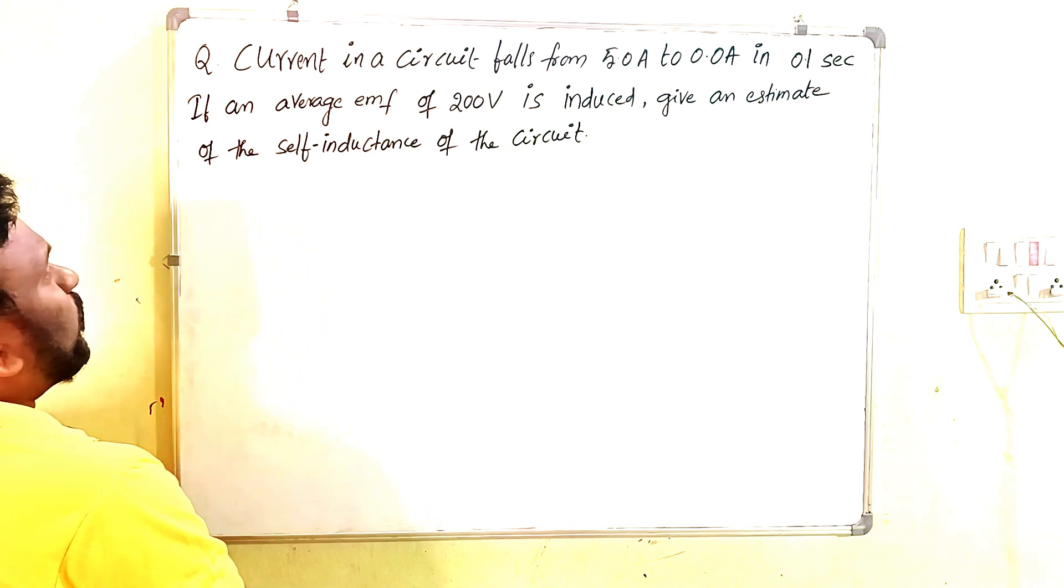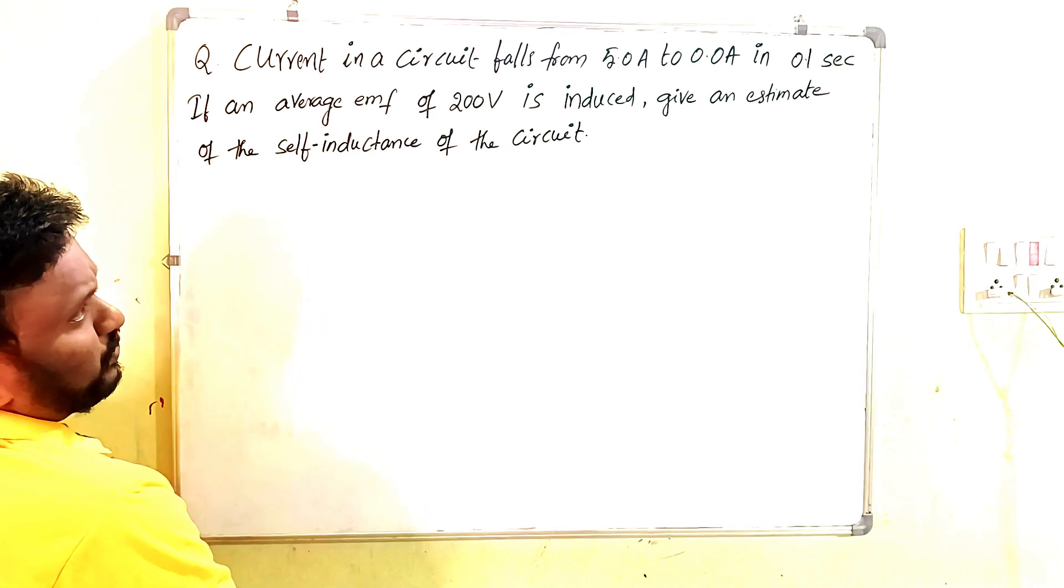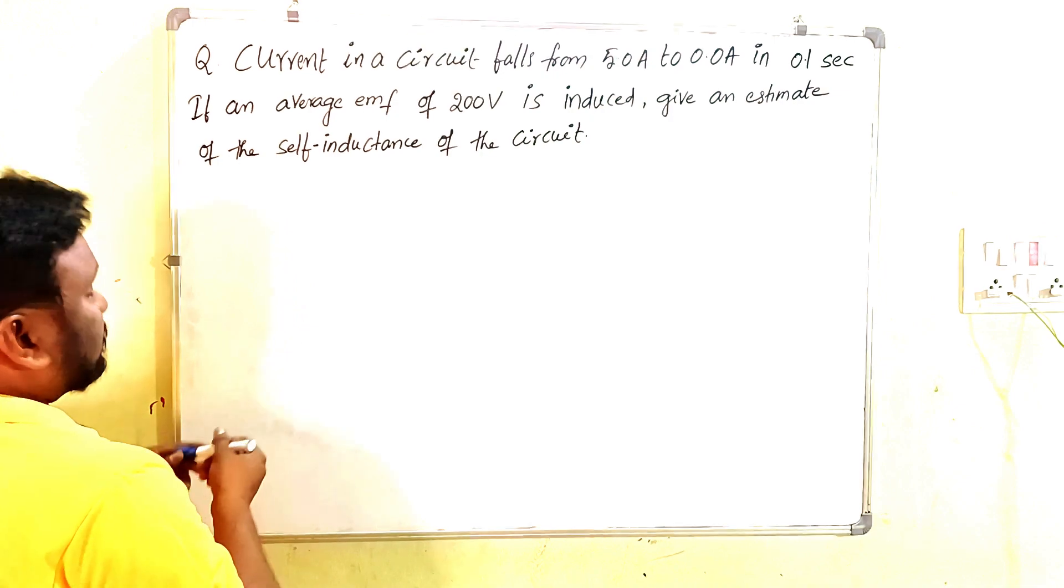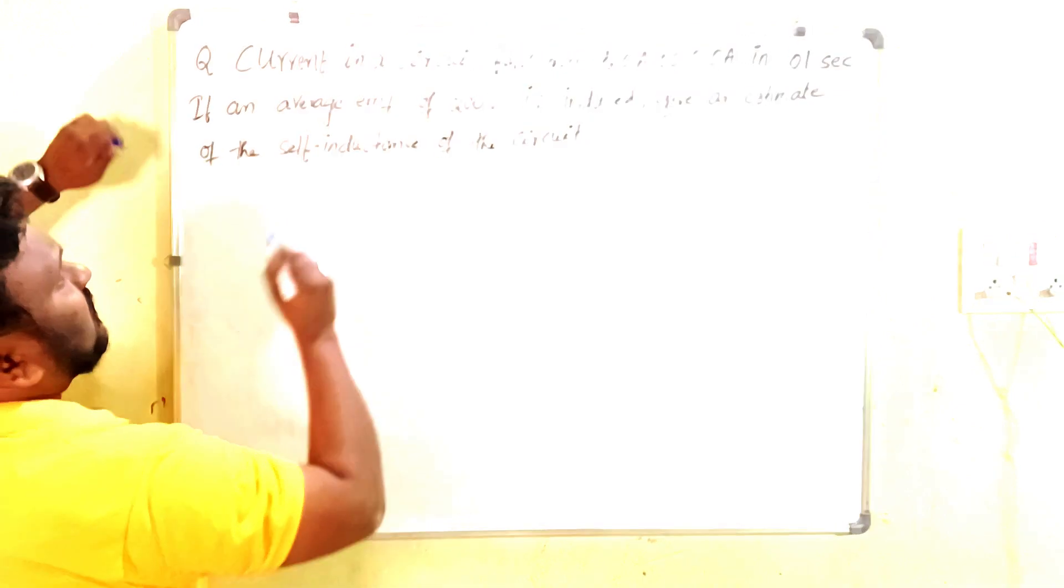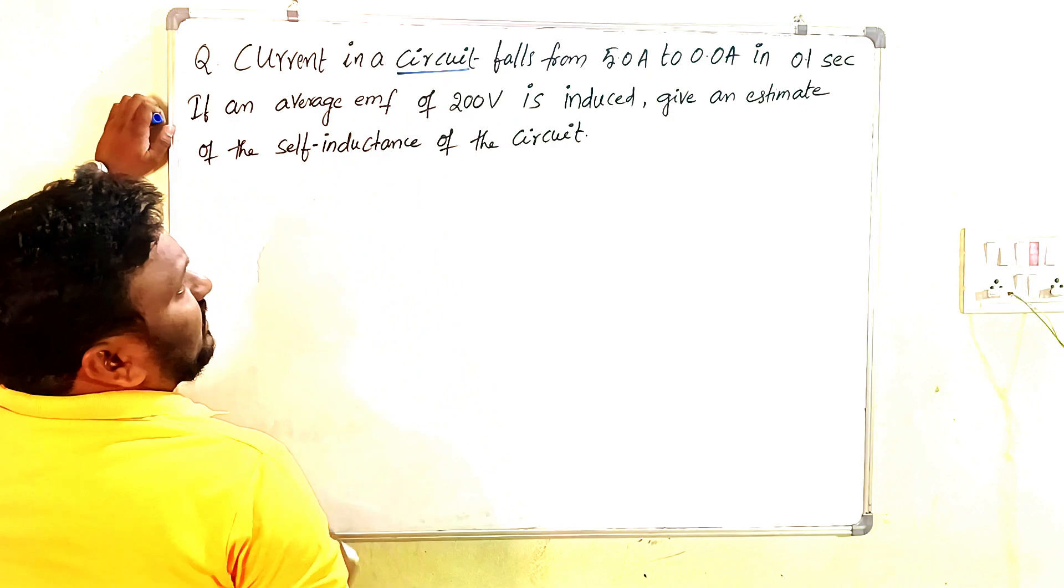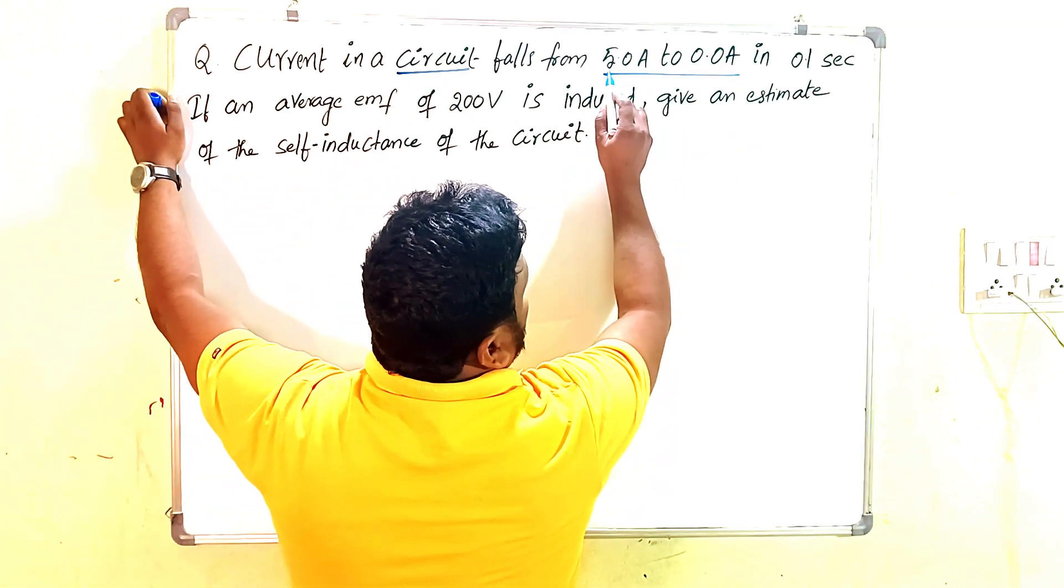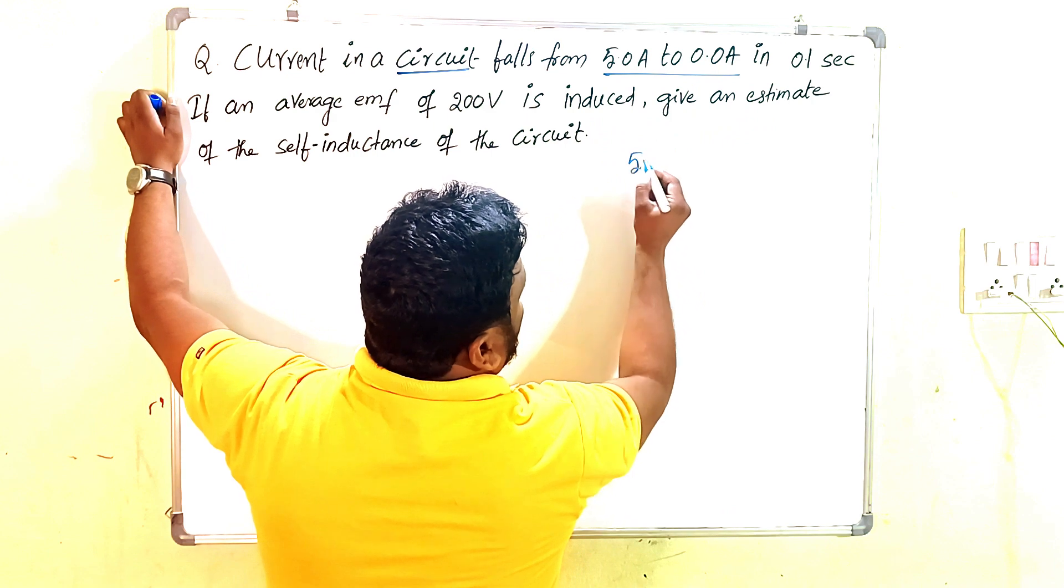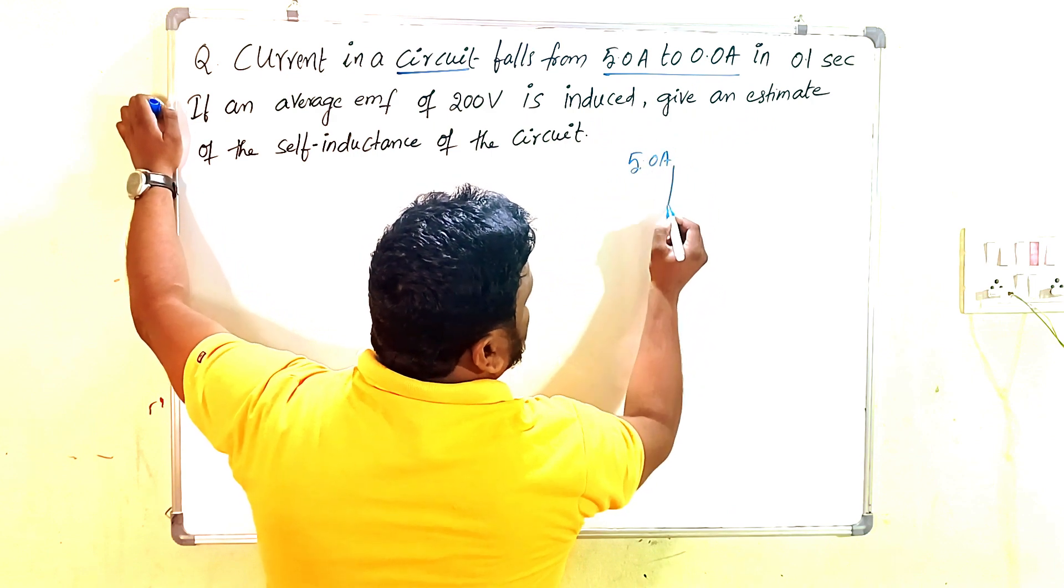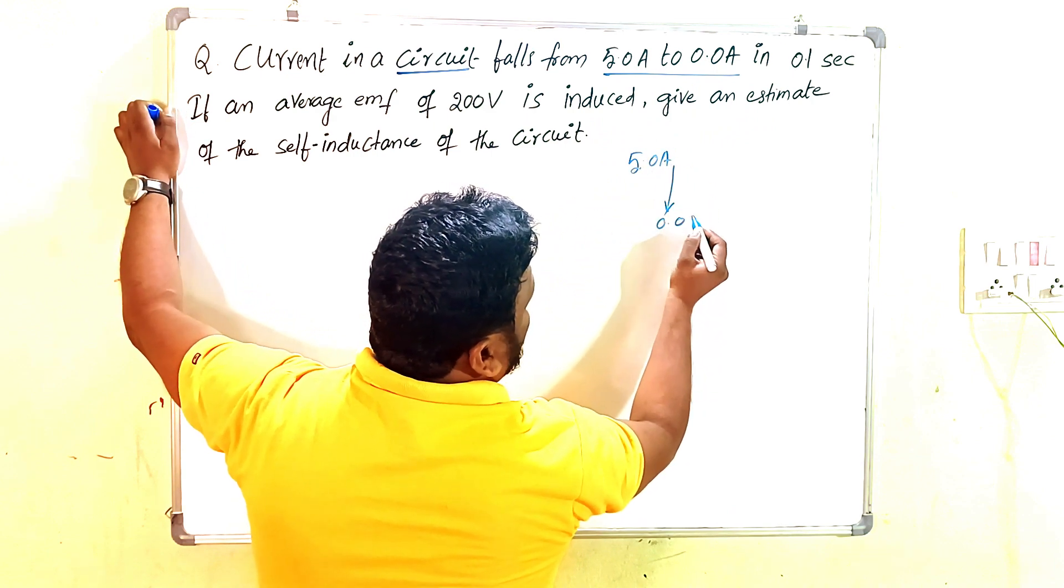So there is one circuit in which the current value is falling from 5.0 amperes to 0.0 amperes.